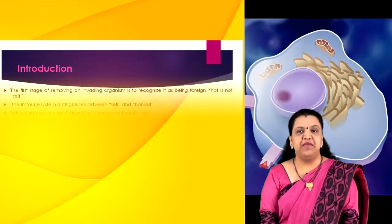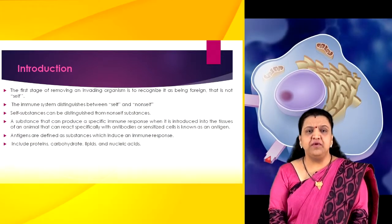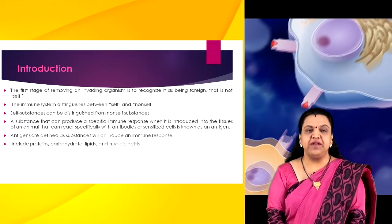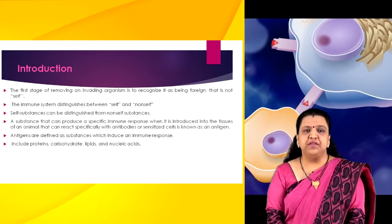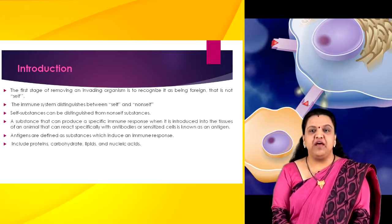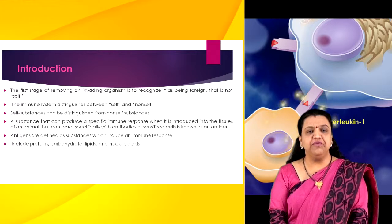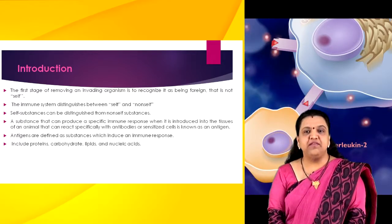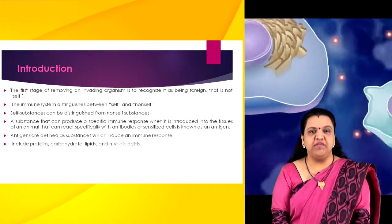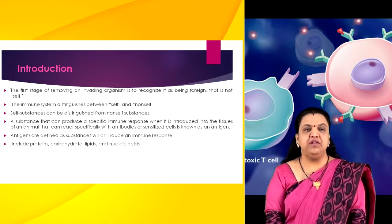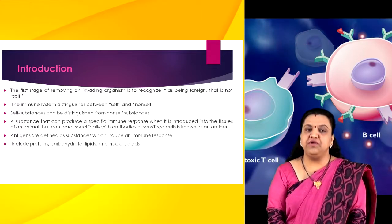The first stage of removing an invading organism is to recognize it as being foreign, i.e. not self. The immune system distinguishes between self and non-self through an elaborated recognition process. Prior to birth, the body inventories the proteins and various other large molecules present, i.e. self, and removes most T-cells specific for self-determinants. Subsequently, self substances can be distinguished from non-self substances and lymphocytes can produce specific immunological reactions against the latter, leading to their removal.